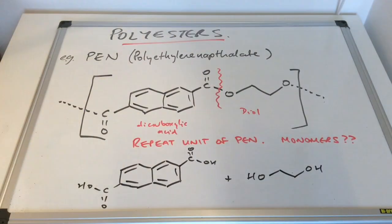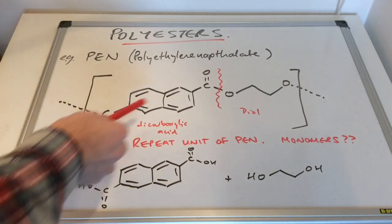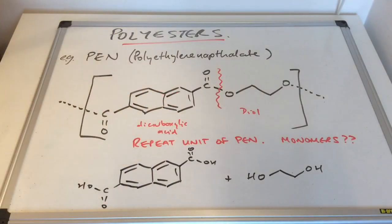And there's the answer. And the only thing I would say is to be careful with this one is to make sure that your carboxylic acid groups are in the right place. So if you look at where they are on the repeat unit, this one here needs to be down there. Whereas this one here needs to be up here.